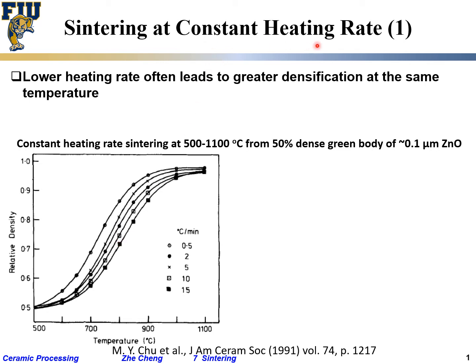Actually, it's not isothermal — it's constant heating rate, meaning you just ramp up the temperature. When you heat slower, when you reach a given temperature, you have already put more heat into the system.